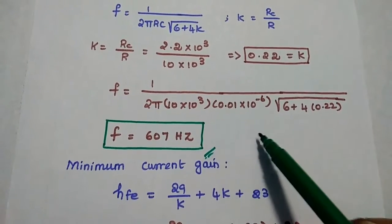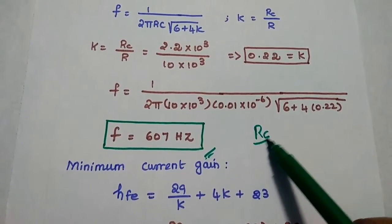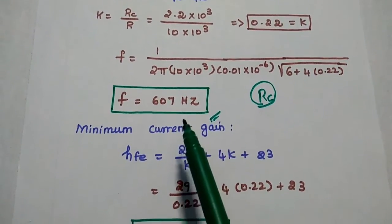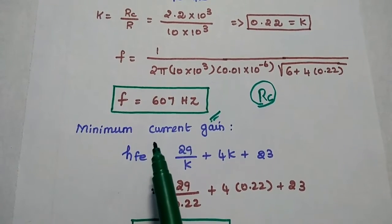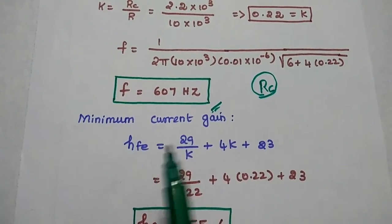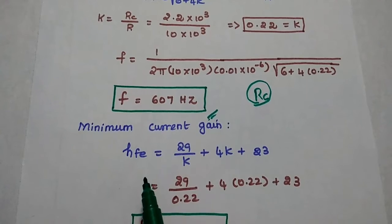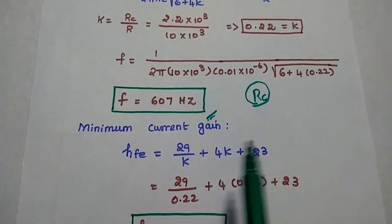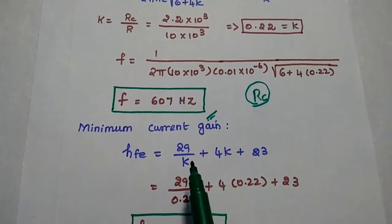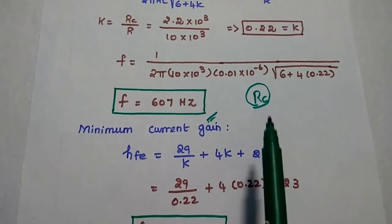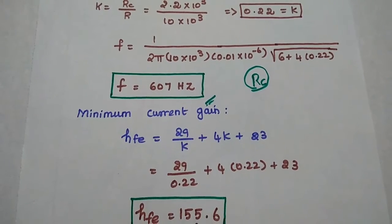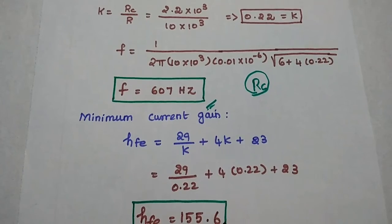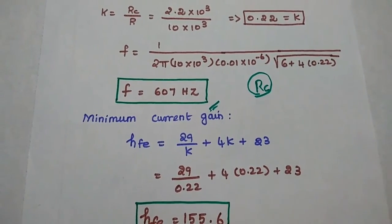If the RC value is given, then we use this formula. Next, we find the minimum current gain: HFE is equal to 29 by K plus 4K plus 23. Substituting K as 0.22, we get the answer as 155.6. This is the minimum current gain for the given specifications.